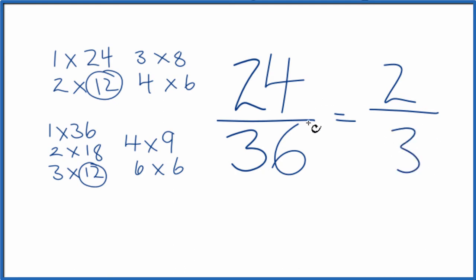So we've simplified the fraction 24/36 down to 2/3, and we can't simplify this any further. These are equivalent fractions. If you divide 24 by 36 or 2 by 3, you get the same answer. It's just that we've simplified 24 over 36 down to 2 over 3.